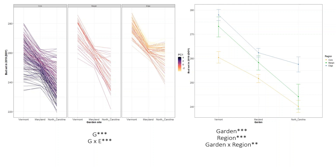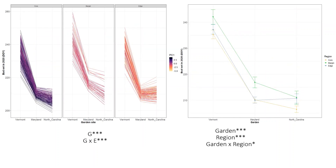In order to understand the sensitivity of functional traits to varying environments and partition the variance explained by genotype, environment, and the G×E interaction, I plotted reaction norms. The plot on the left shows genotypic variation at family level across each garden site. The x-axis represents garden sites from the northern Vermont towards the southern North Carolina, and the y-axis is bud set timing in day of the year. The plot shows a significant G and G×E for this trait in 2019. The plot on the right shows the geogenetic difference for bud set timing: the colder core region tended to set bud earliest compared to the warmer edge region that set bud the latest across the southern site. For the second growing season, buds set much later at Vermont compared to Maryland and North Carolina; however, both the core and edge had similar bud set timing, setting buds earlier compared to the margin region.